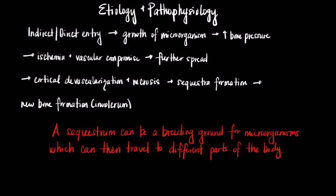As these microorganisms continue to spread and proliferate, they lead to cortical devascularization and necrosis — basically bone death. The area of dead bone, called the sequestra, then separates from areas of the bone that continue to receive blood supply. The new bone that forms around the sequestra is called the involucrum.